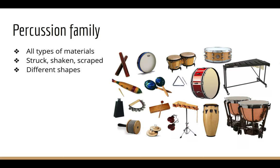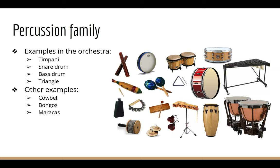Lastly, let's talk percussion. Percussion instruments can be made of all types of materials, as you can see in the picture. An instrument in the percussion family makes a sound when it is struck, shaken, or scraped. There are many different shapes of percussion instruments. Orchestra examples include the timpani, the snare drum, the bass drum, and the triangle. Other examples include cowbell, bongos, and maracas.